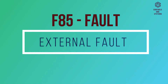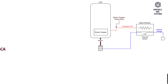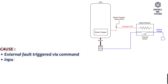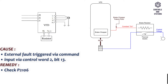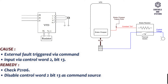F85 Fault: external fault. Cause: external fault triggered via command input via control word 2, bit 13. Remedy: check P2106, disable control word 2 bit 13 as command source.